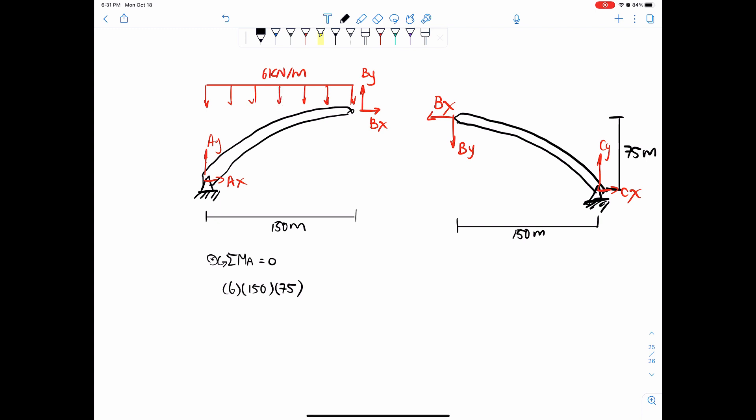So that, and then which way is this going? This is going negative because it wants to spin it clockwise. Now BY, BY wants to spin the system counterclockwise. So plus BY times 150, and that's the perpendicular distance. And then don't forget your BX, so this wants to spin it counterclockwise, BX times, what's the vertical distance? So perpendicular distance is 75 meters coming from here.